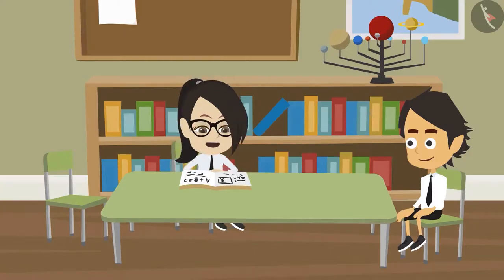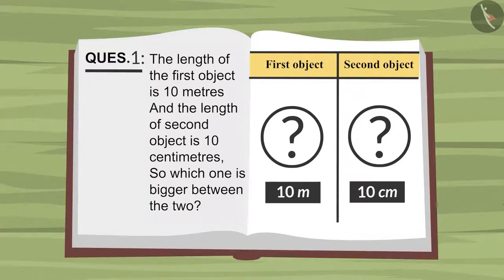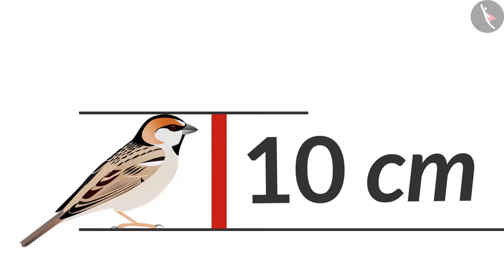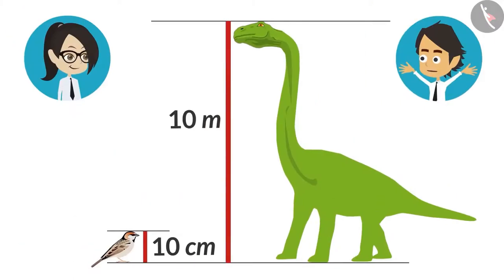Yes, I understand it now. 10 meter is bigger than 10 centimeter. Do you know this length could be that of a sparrow and a dinosaur? Because a sparrow could be 10 centimeters long, whereas a dinosaur could be about 10 meters long.